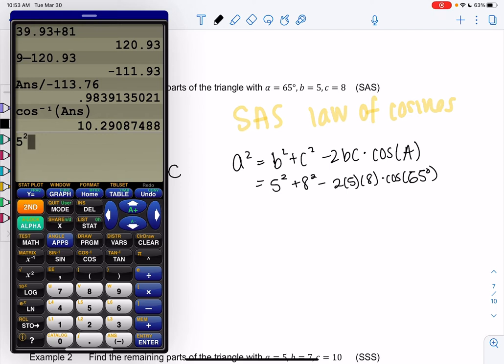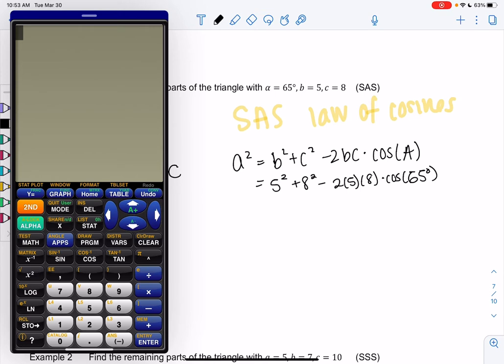So 5² + 8² minus 2 times 5 times 8 all times cosine of 65. Let's get rid of all that stuff. Double check that you're in degrees.